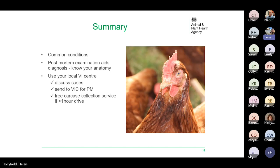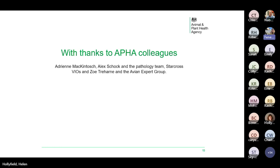To summarise: remember that common conditions occur commonly. Keep in mind that a post-mortem examination can aid your diagnosis, so know your bird anatomy and what normal looks like. Use the expertise at your local VI centre — VIOs are happy to discuss cases and can advise on what samples to take — and we have specialist poultry pathologists at Lasswade who can help with challenging cases. You can send poultry carcasses to your local VI centre for a post-mortem; the cost to private vets in June 2023 is £43.10, including any lab tests and histology. There is also a free carcass collection service for anyone over one hour's drive from a centre. I would like to thank my APHA colleagues for their input and for the photographs used.